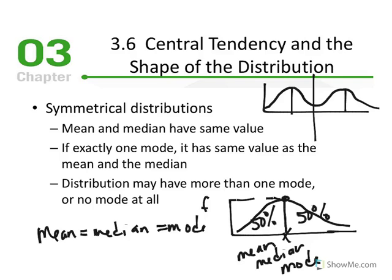In a symmetrical distribution, mean, median, and mode are all equal. Something to think about: if we have a symmetrical distribution, which measure of central tendency would you report? The answer would actually be the mean, since they're all equal. If a distribution is symmetrical, we prefer to report the mean as the best measure of central tendency because it's the most understood. But we recognize that the median and mode are exactly identical to that mean value.